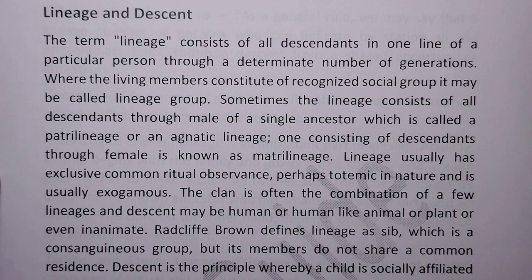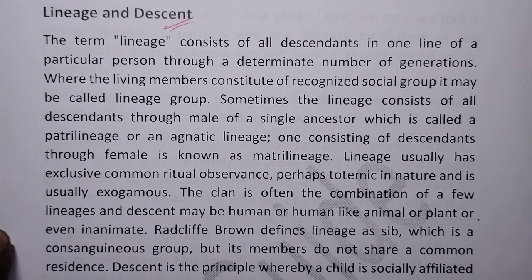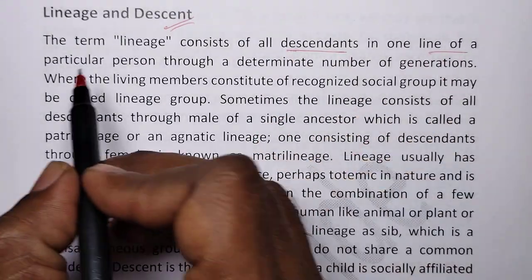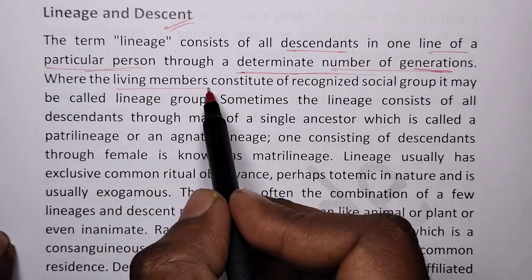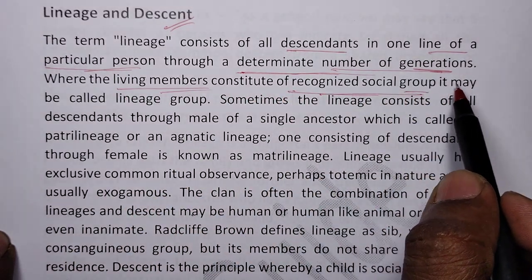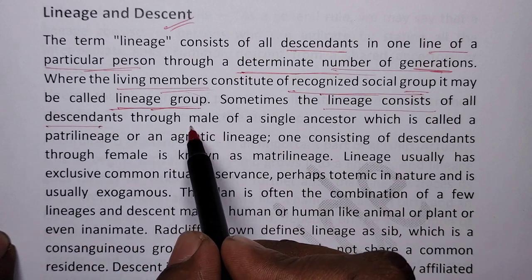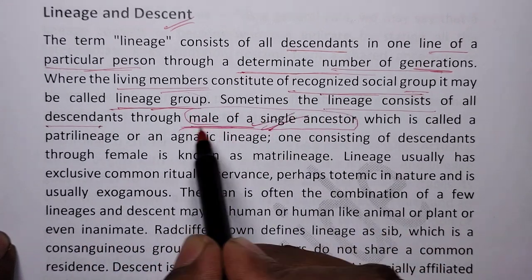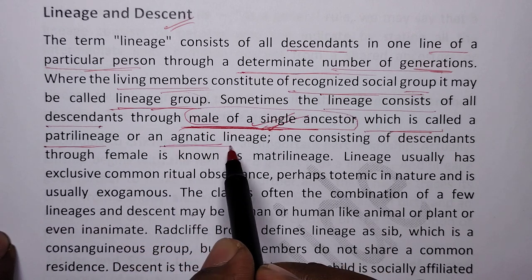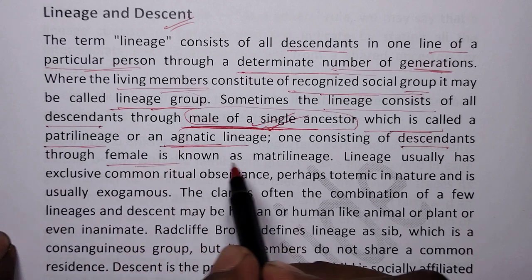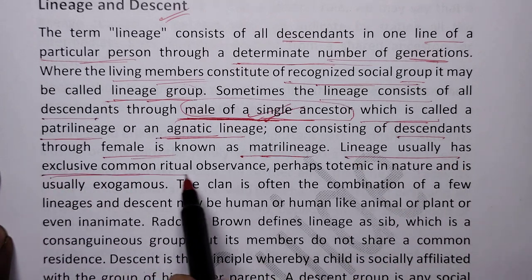Today we will discuss the topic of lineage and descent. The term lineage consists of all the descendants in one line of a particular person through a determinate number of generations, where the living members constitute a recognized social group, sometimes called a lineage group. Lineage consisting of all descendants through the male of a single ancestor is called a patrilineage or agnatic lineage. One consisting of descendants through the female is known as matrilineage.